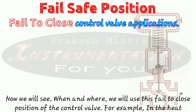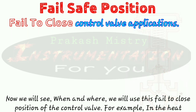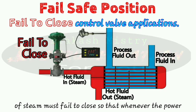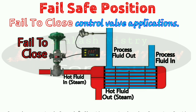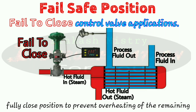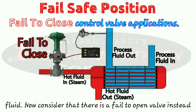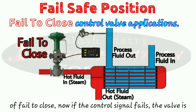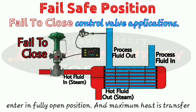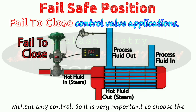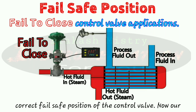Now we will see when and where we use the fail to close position. For example, in a heat exchanger, the control valve that controls the flow rate of steam must be fail to close, so that whenever the power or control signal fails, the control valve enters the fully closed position to prevent overheating of the remaining fluids. Consider if a fail to open valve were used instead — if the control signal fails, the valve enters the fully open position, maximum heat is transferred to the process fluids, and the process fluid temperature increases without any control. So it is very important to choose the correct fail-safe position.